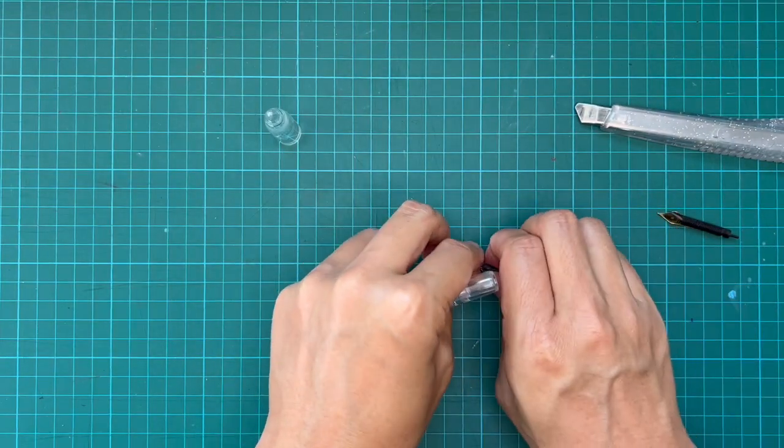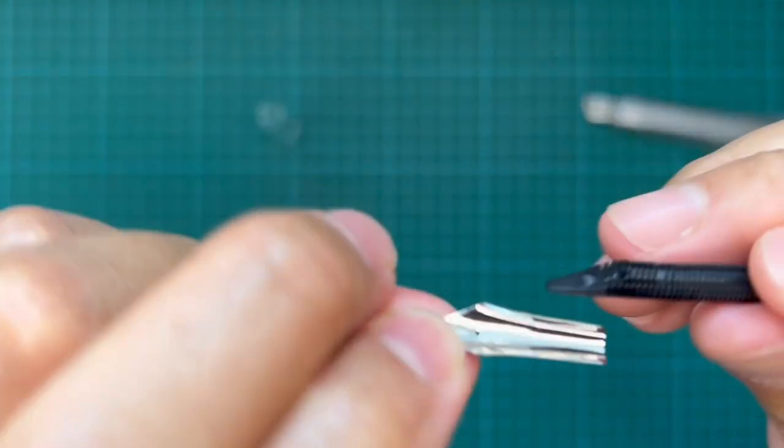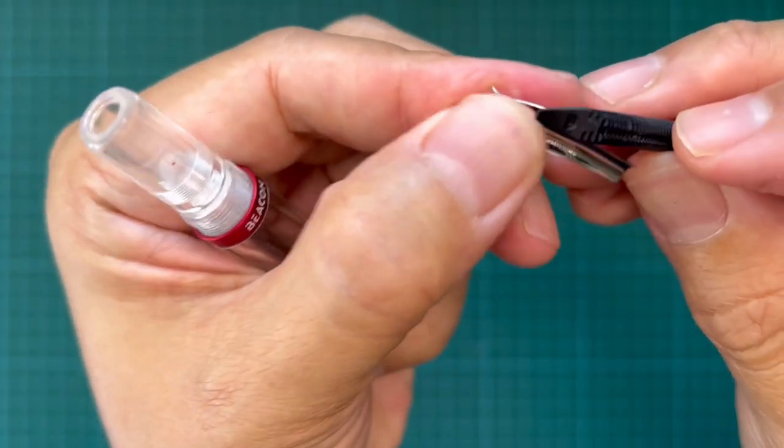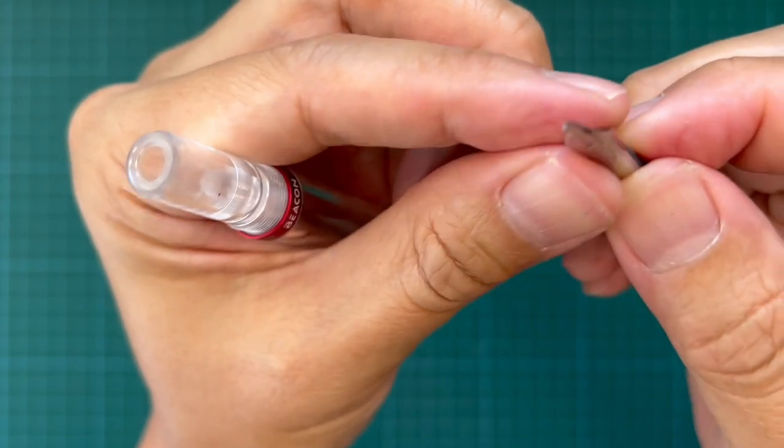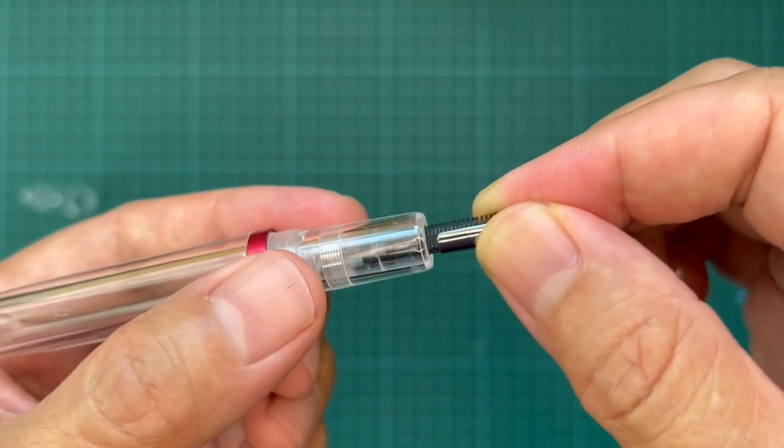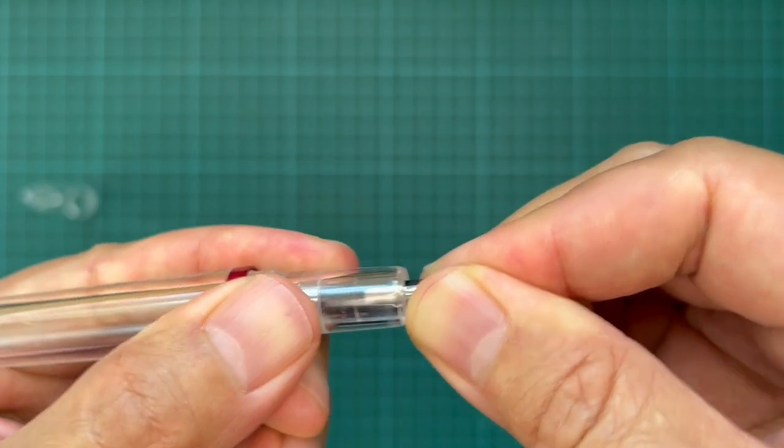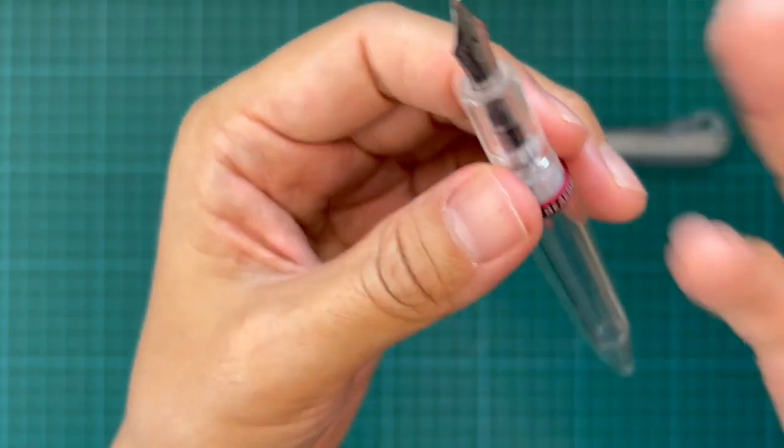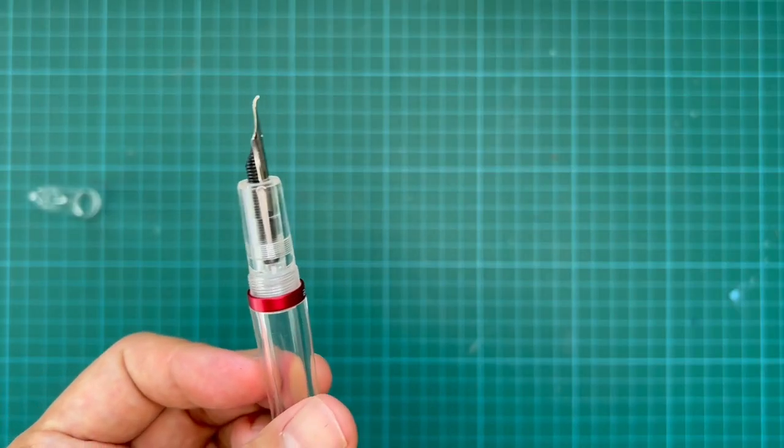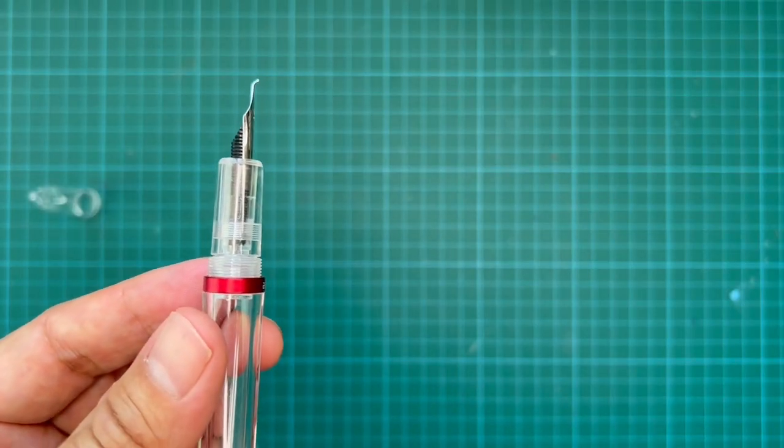So right now I have the Hongtian fude nib. Make sure it's aligned, I can just put it in and it should just feed in. And once again, it fits perfectly. I've tried various brands and in the end this one fits the best. And now I have a fude nib Moonman pen.